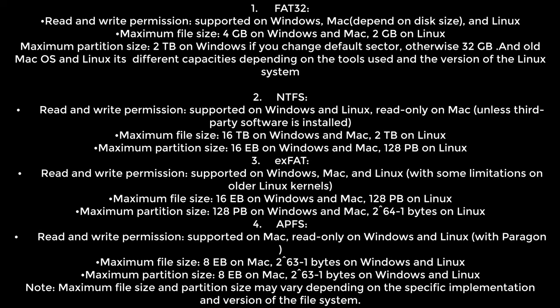1. FAT32. Read and write permission: supported on Windows, Mac, and Linux. Maximum file size: 4GB on Windows and Mac, 2GB on Linux. Maximum partition size: 2TB on Windows if you change the default sector, otherwise 32GB; and on old Mac OS and Linux, different capacities depending on the tools used and the version of the Linux system.